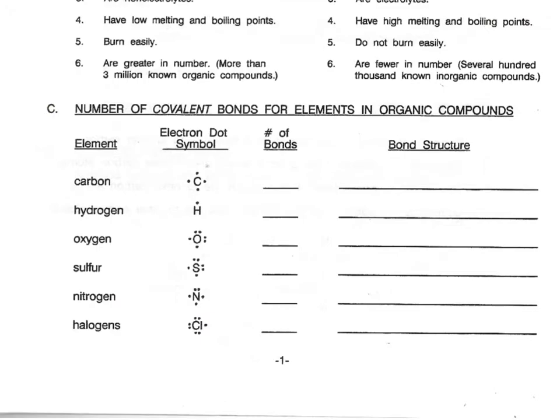Now we're going to look at how we can draw those organic compounds. Since these are covalent bonds in the organic compounds, we're going to use Lewis dot structures to help us draw them. So we're going to start with carbon. With carbon, we know that there are four dots because it's in group 4A. Now let's look at how many single dots there are — if they're single, they're going to want to find a partner to bond with. In the case of carbon, we have four single electrons, which means that there will be four bonds.